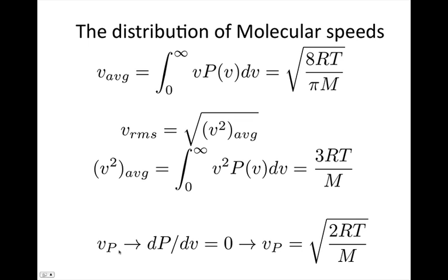And finally, the most probable speed, well, that occurs when dp dv is equal to 0. And so again, using maths, we can solve that to show that the most probable speed is equal to the square root of 2RT on m.